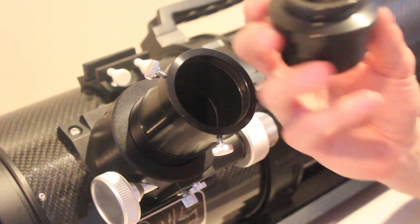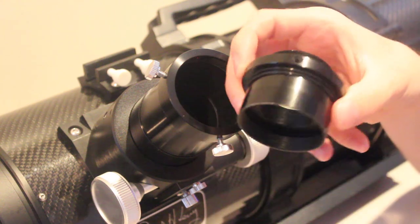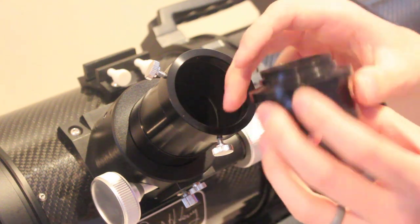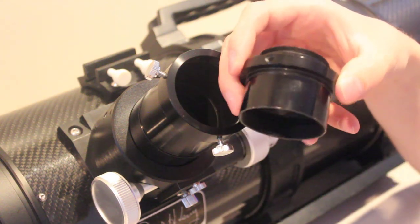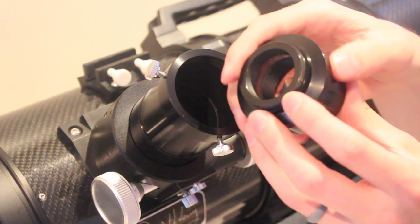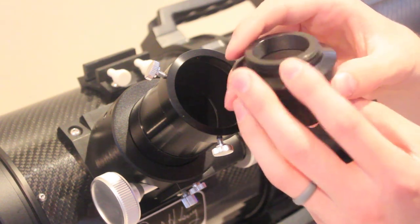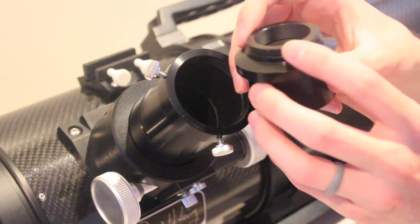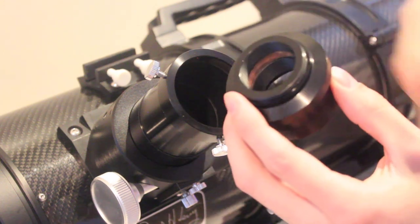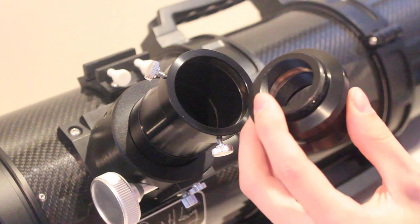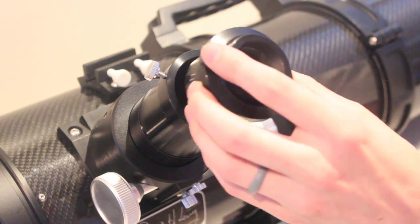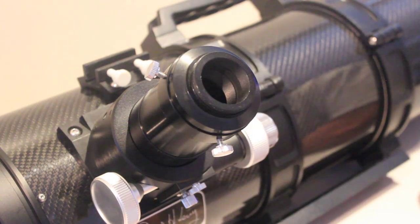Okay, so the easiest way to do this is to use a simple 2-inch insert with T-threads. So this is an Explore Scientific 2-inch eyepiece adapter, but it does have T-threads on the top. And this makes it really easy because with these T-threads all you have to do is just thread your camera into the T-threads and then drop it right into the focuser and tighten it down.